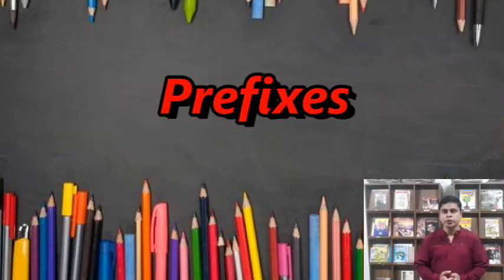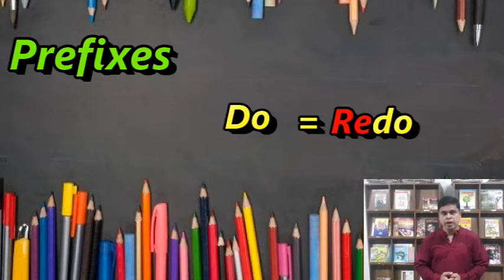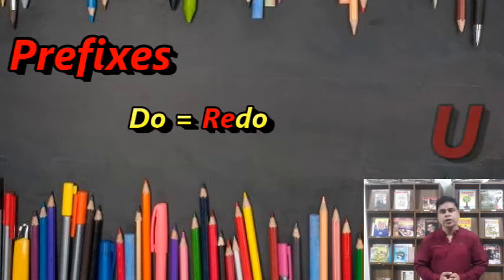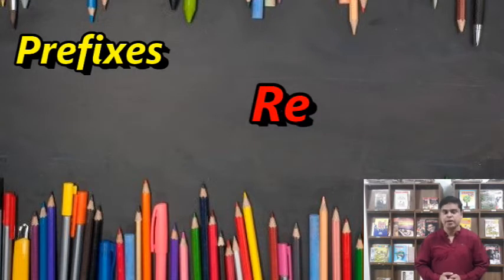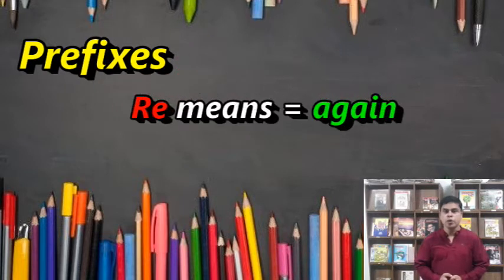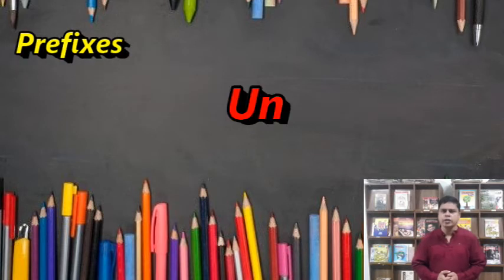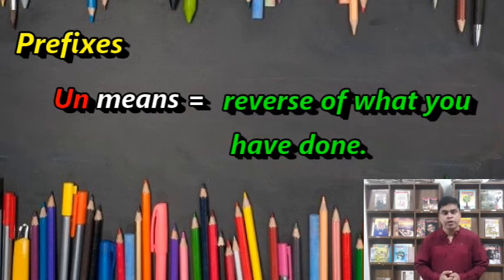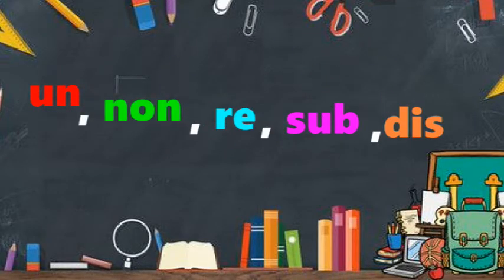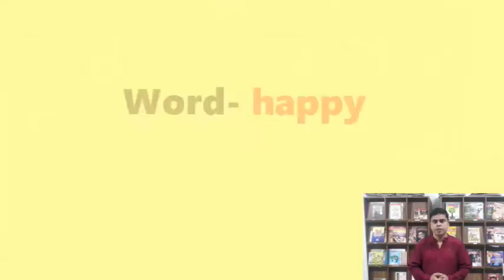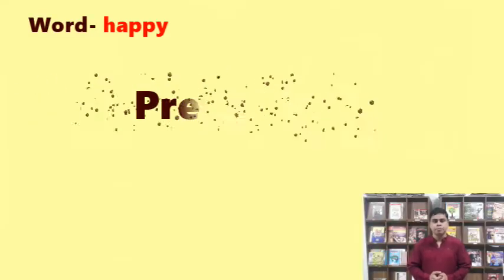We all know the word 'do'. Did you know that you can 'redo' something, and if you are not happy with it you can 'undo' it? The prefix 're' means again — redo means to do again. The prefix 'un' is the opposite, so if you undo something you reverse what you have done. Examples of prefixes: un, non, re, sub, dis, etc.